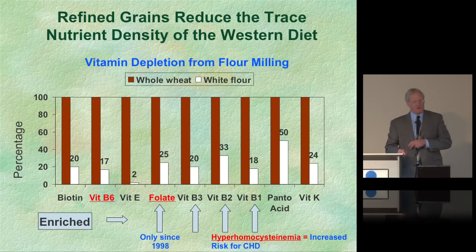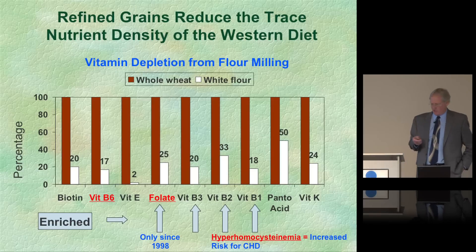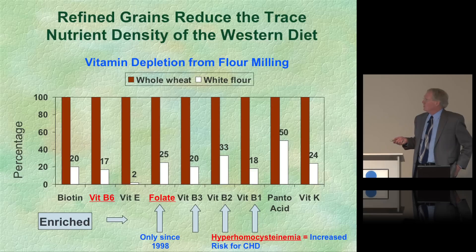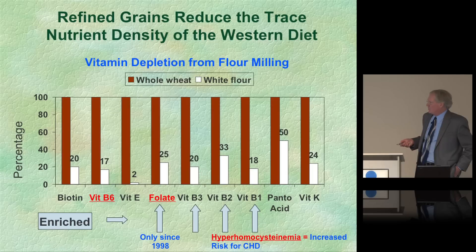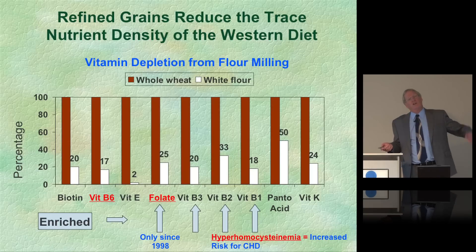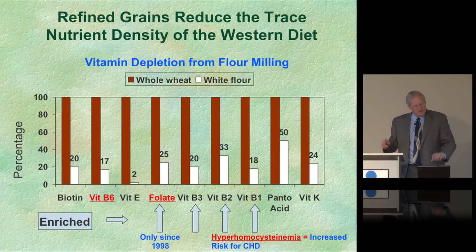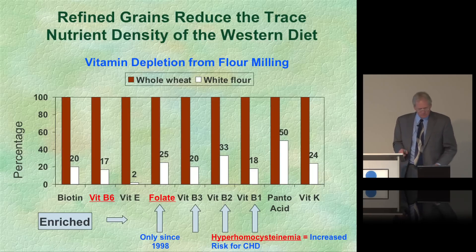What happens to the vitamin content when we refine grains? Whole wheat has much greater concentrations of almost all vitamins. After World War II we began enriching flour with three B vitamins and iron. Since 1998 we've put folic acid back in — which reduces neural tube defects in infants but appears to increase prostate cancer risk, making it a trade-off that doesn't work very well.